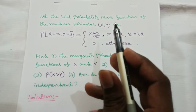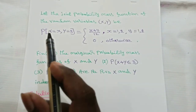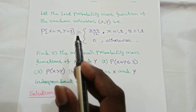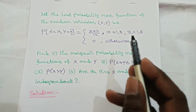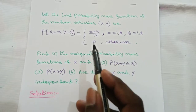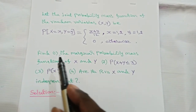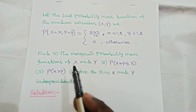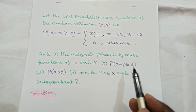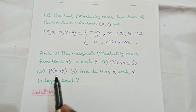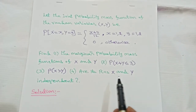Let the joint probability mass function of random variables X and Y be p(x,y) = (x+y)/12, where x = 1,2 and y = 1,2, and 0 otherwise. From this, find the marginal probability mass functions of X and Y, p(X+Y ≤ 3), p(X > Y), and determine whether the random variables X and Y are independent.